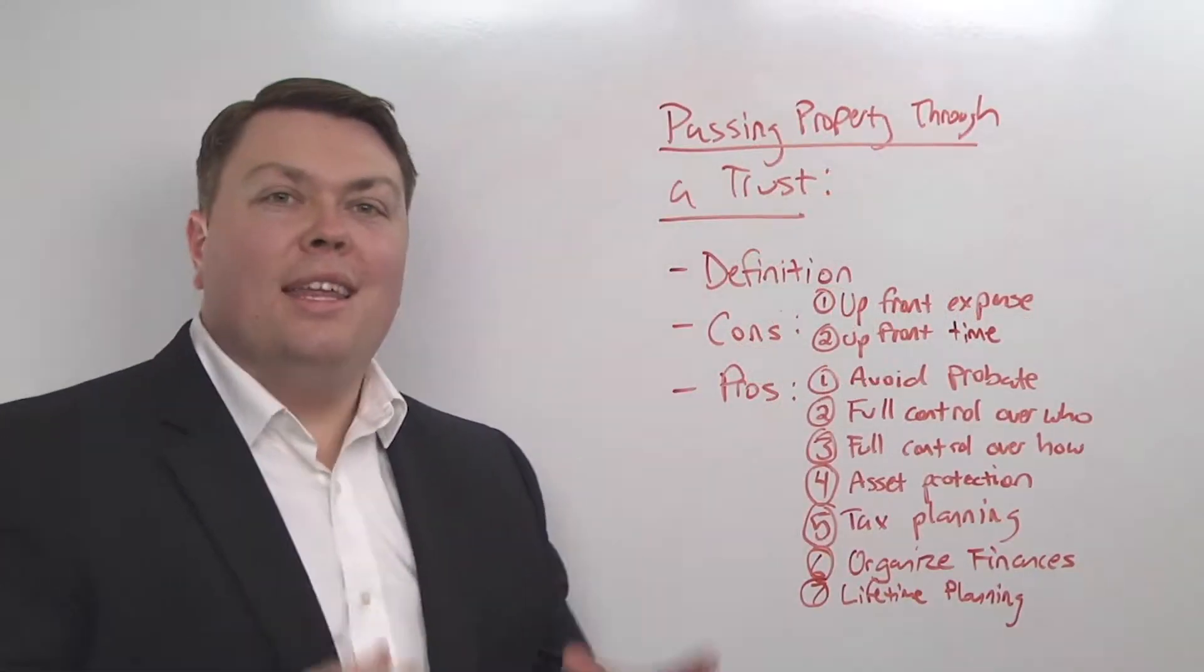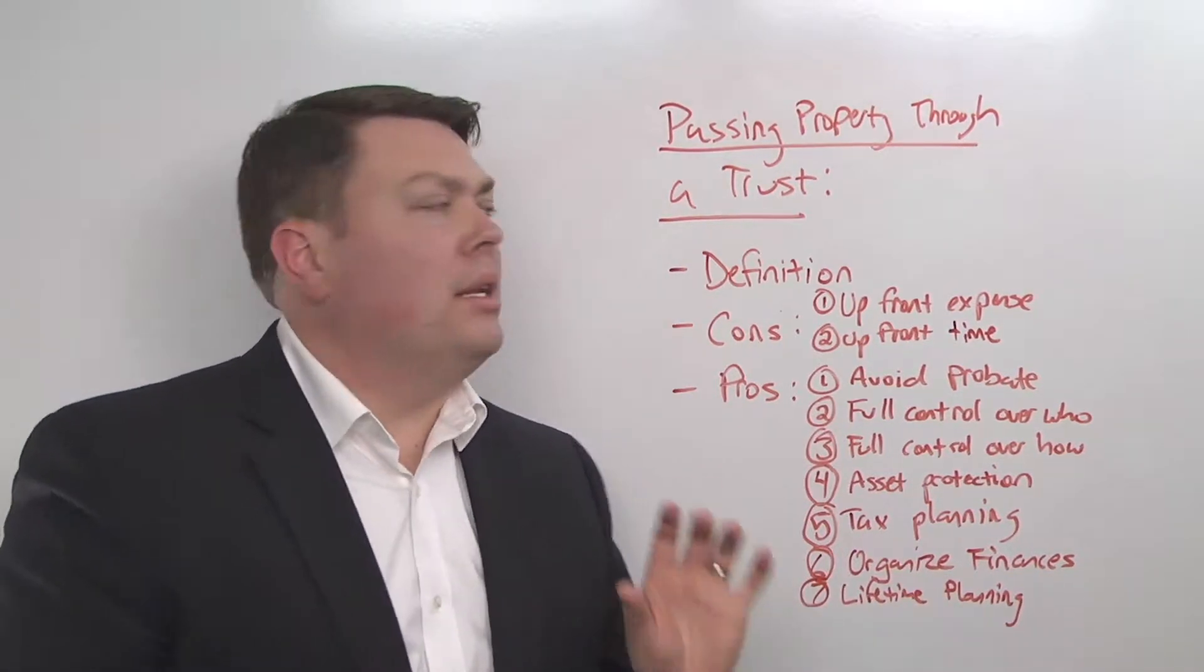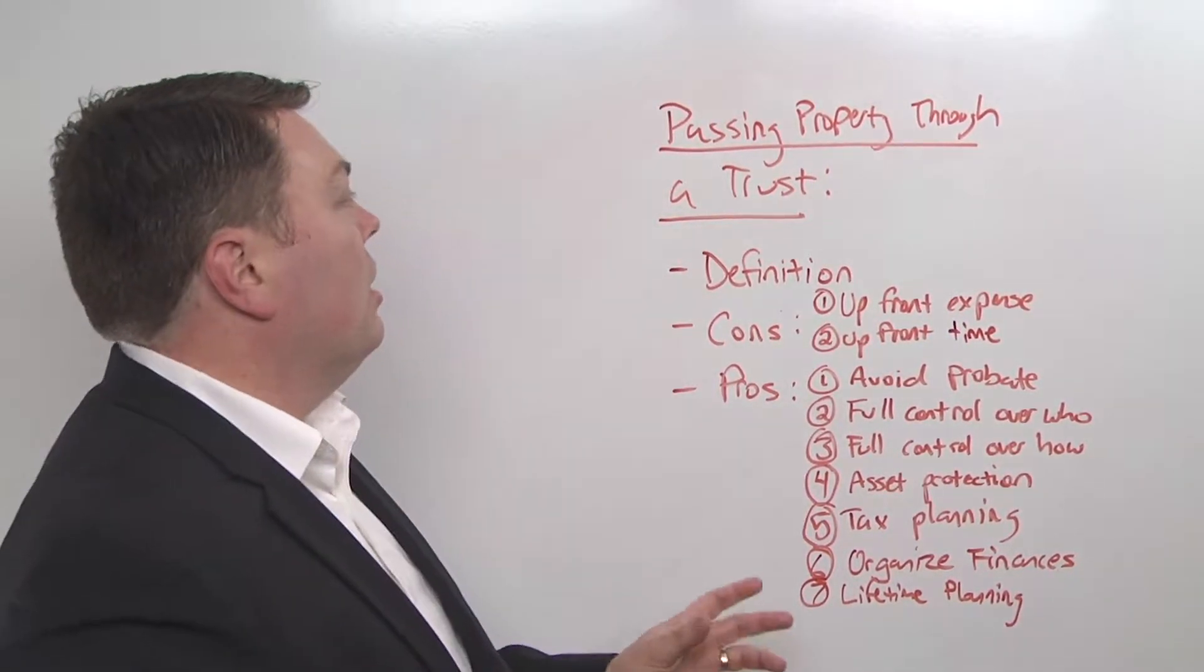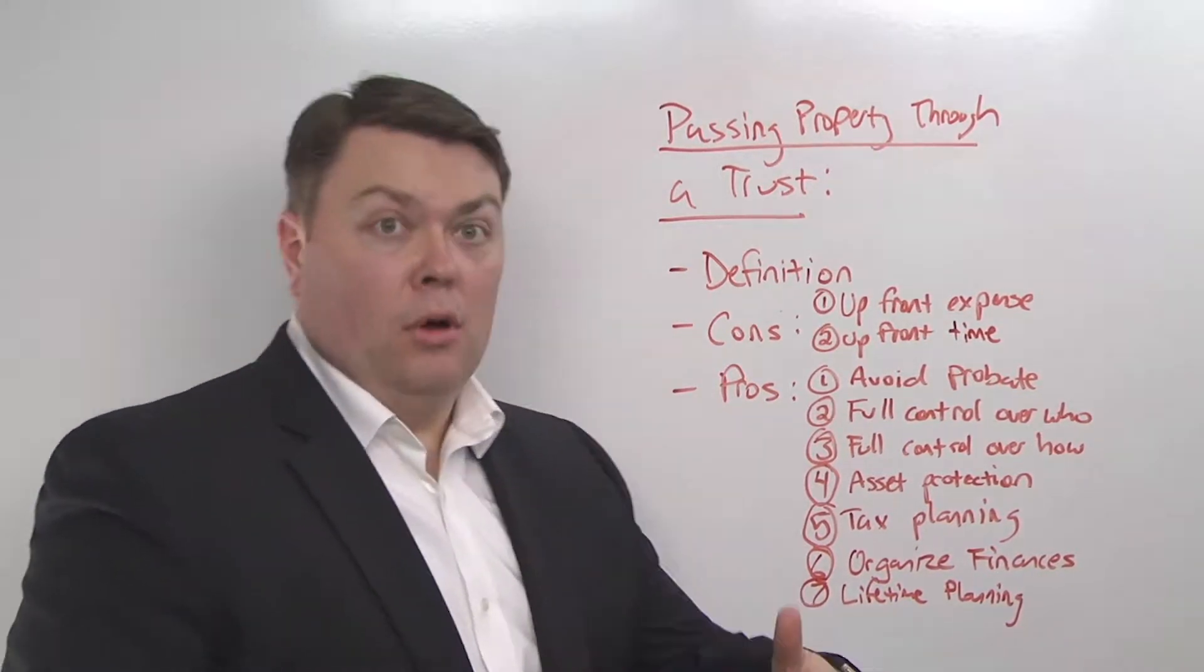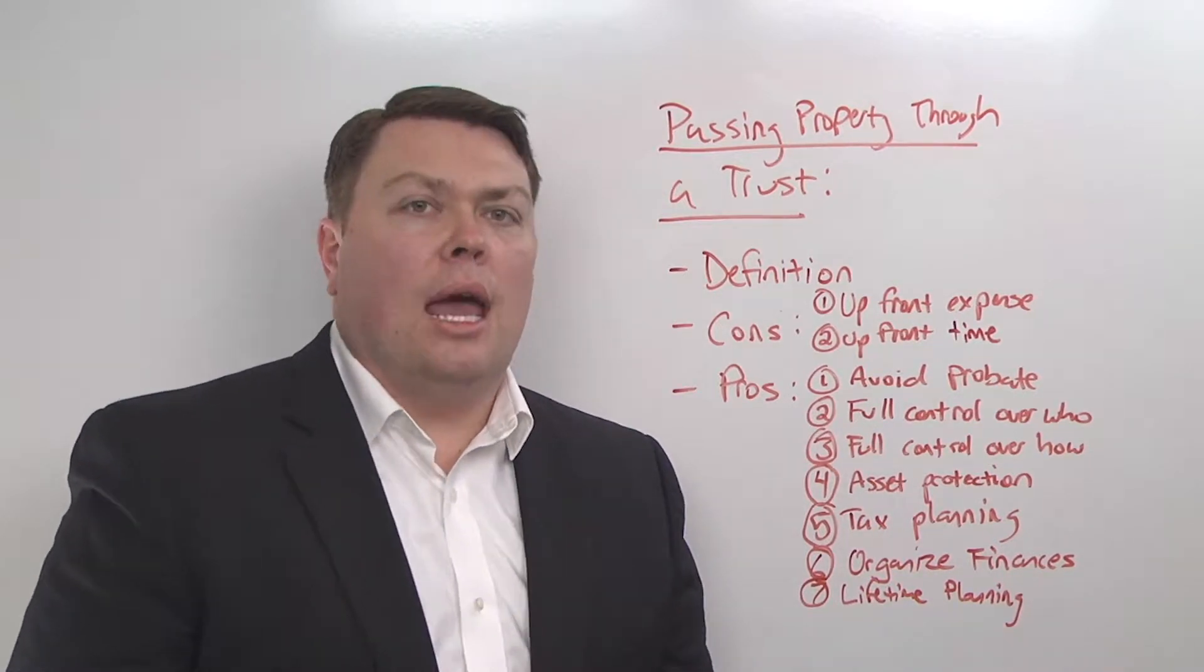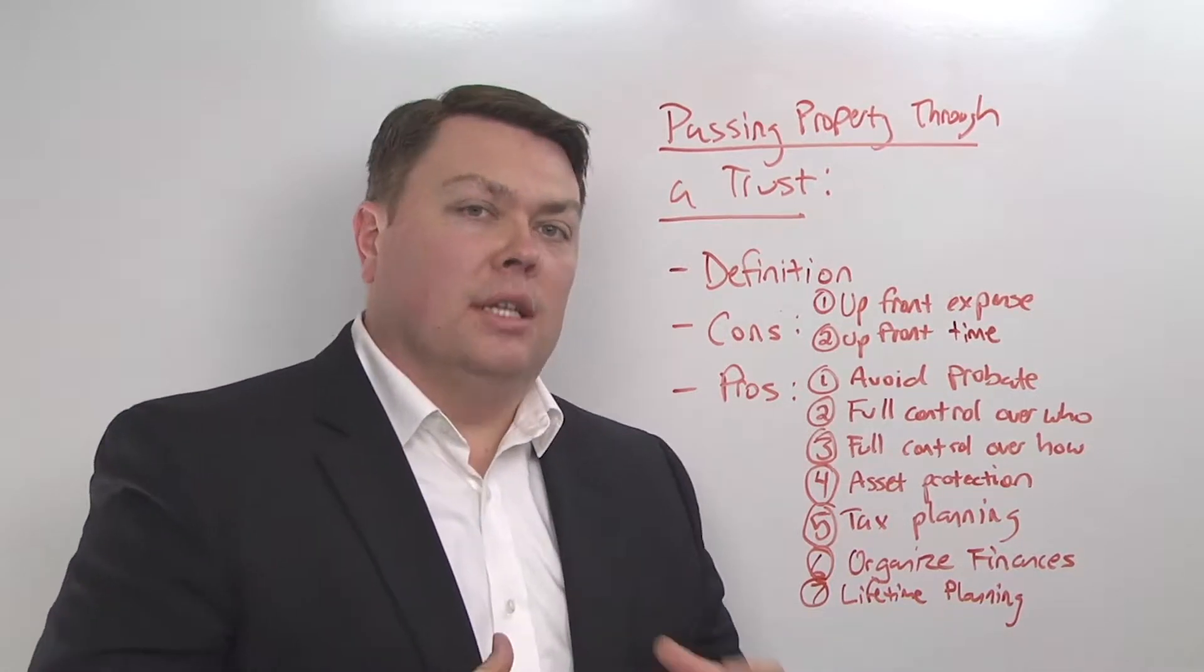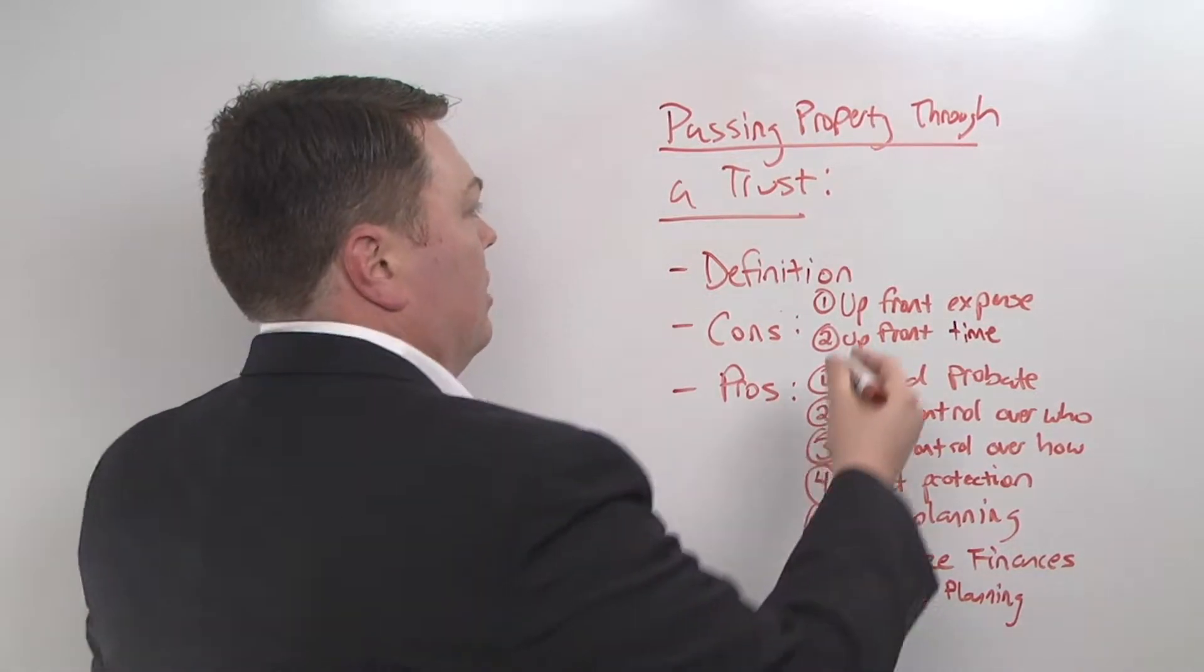So what is a trust? There are actually a lot of terms for the type of trust I'm talking about here. Some people call it a living trust, some people call it a revocable trust, or some people call it a revocable living trust. But essentially what I'm talking about is the type of trust that you can change, you can amend it as you're living. This is usually the basis of an estate plan.